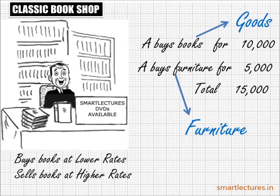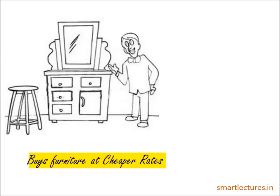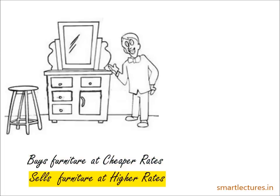Let me explain through one more example. Suppose B starts a business and his business is to run a furniture shop. As a routine, he will buy furniture at cheaper rates and sell them at higher prices to make profits.